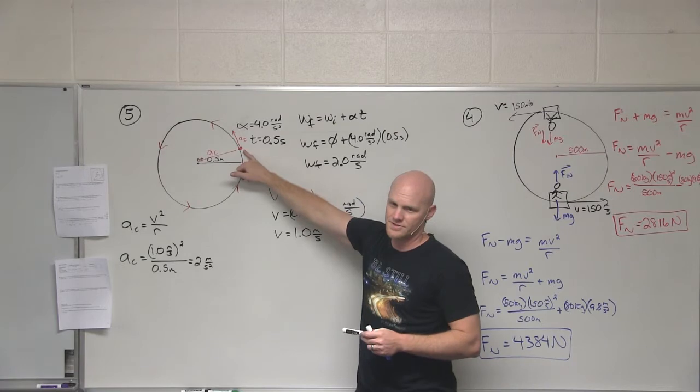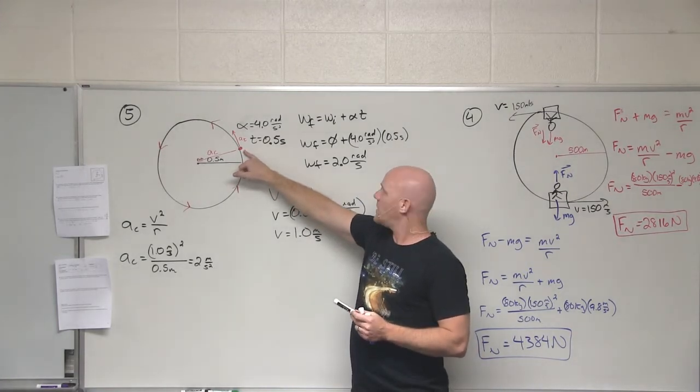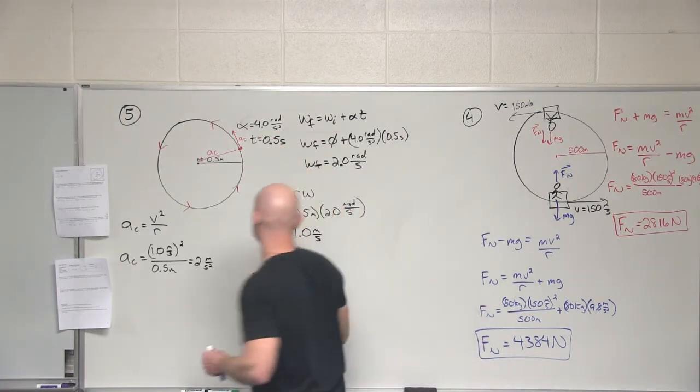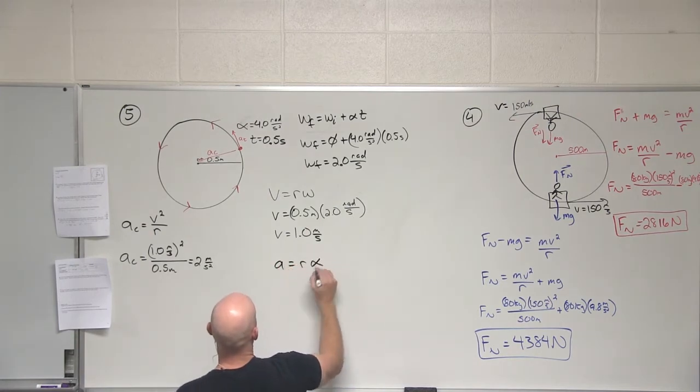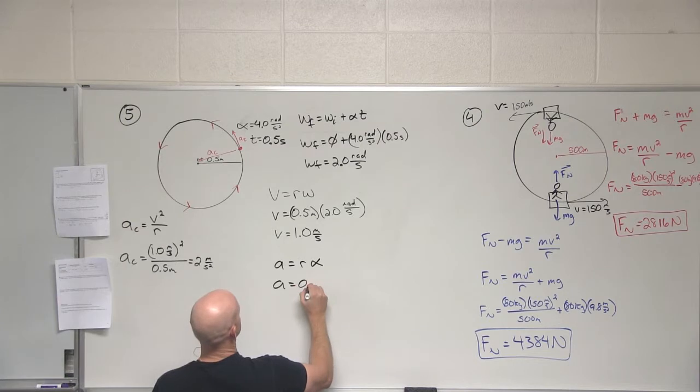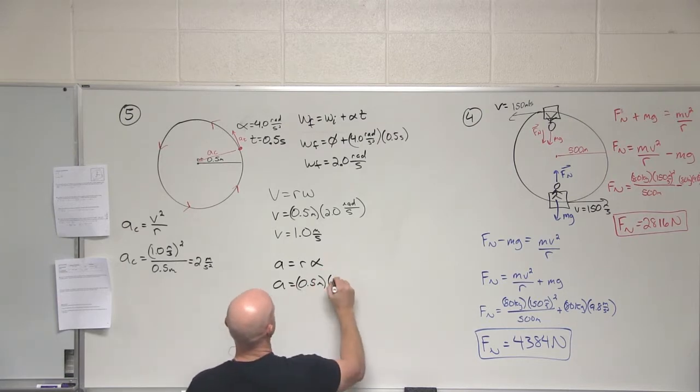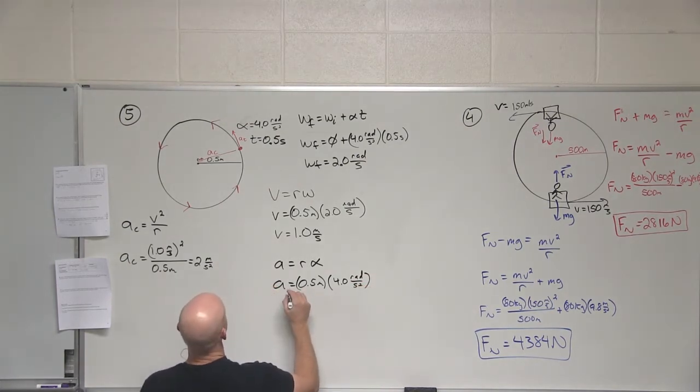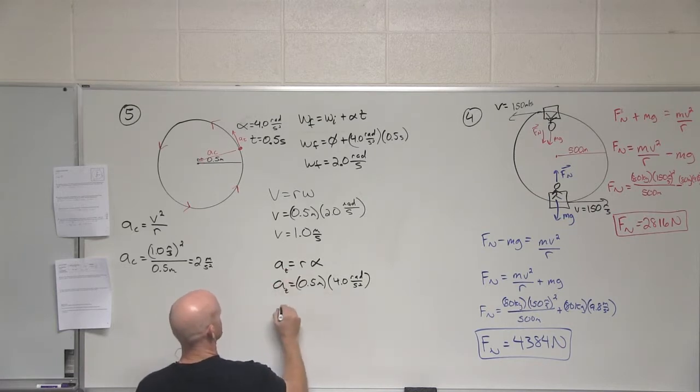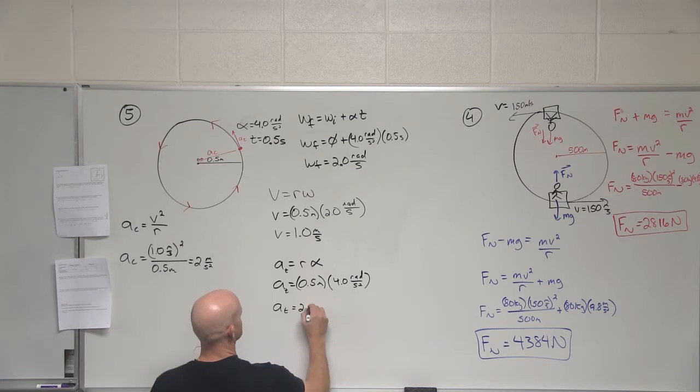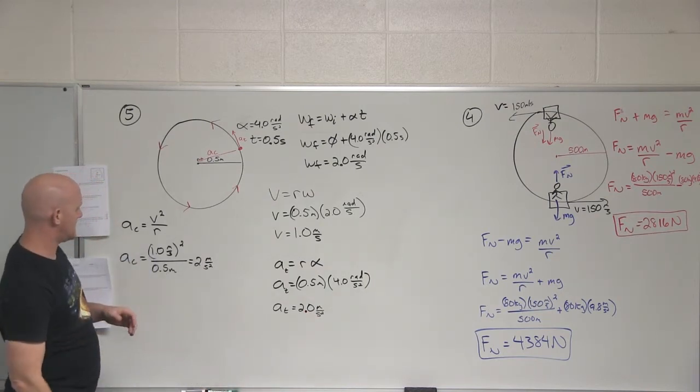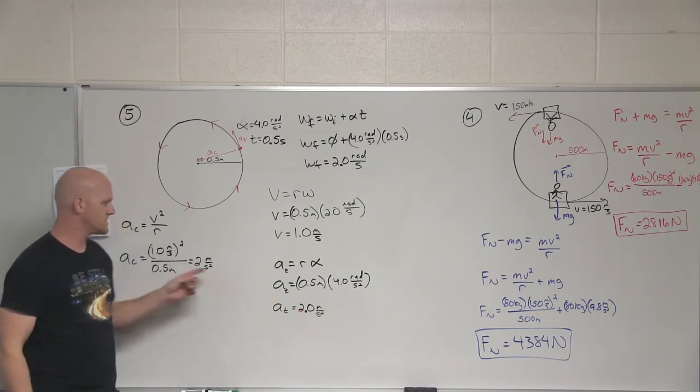Now we need the tangential here. How do I get a tangential acceleration? I'll get it from the angular acceleration. What's the relationship between tangential acceleration and angular acceleration? A equals R alpha. A equals R alpha. Radius is 0.5 meters. Alpha 4.0 radians per second squared. That gets our tangential. So that's 2.0 meters per second squared. And so now we've got our two components here, which both happen to equal 2 meters per second squared.